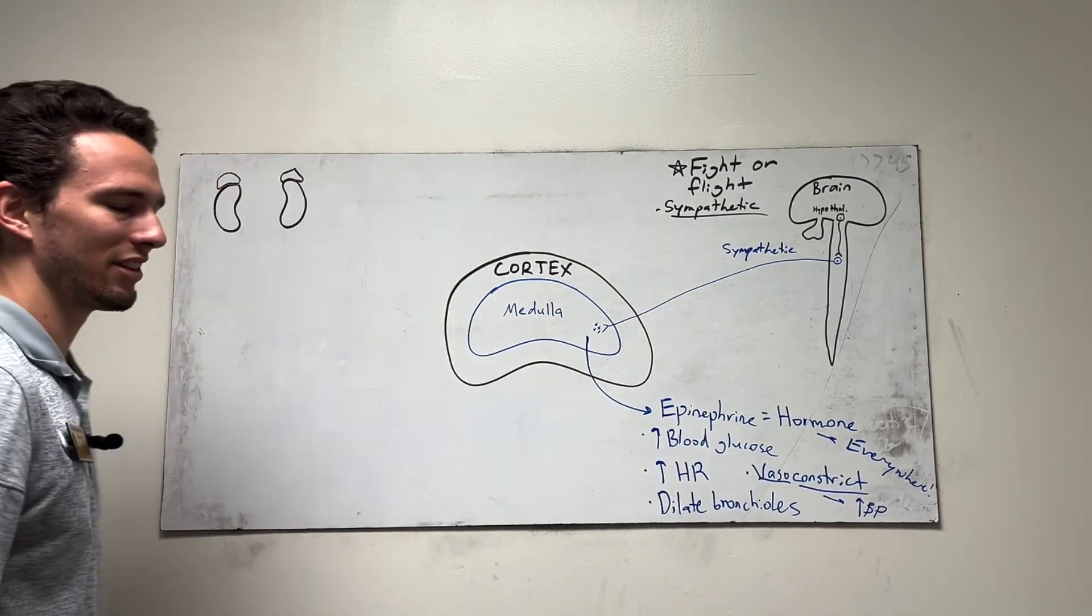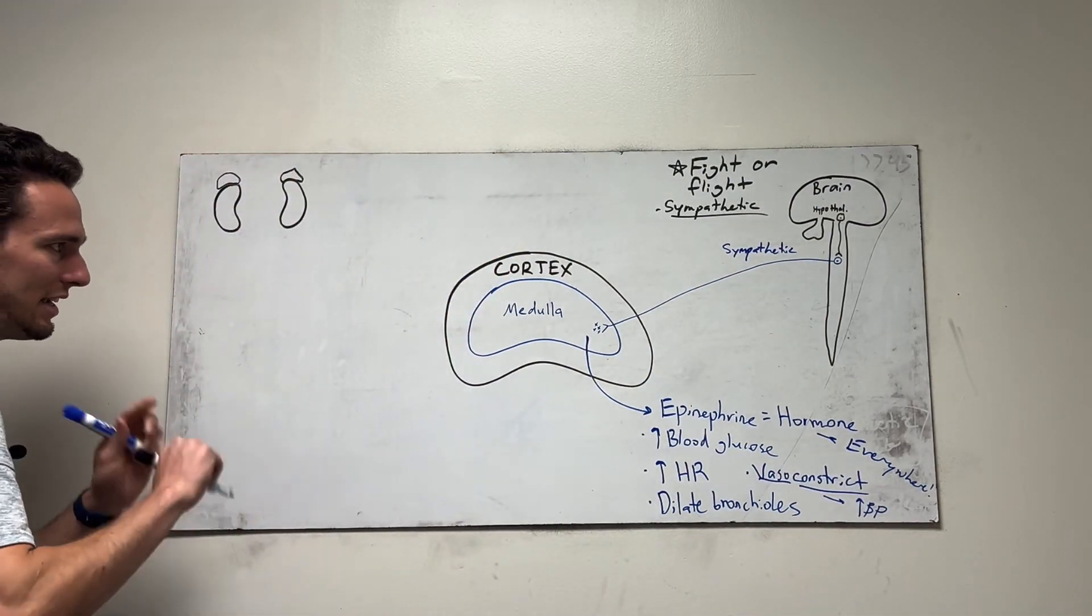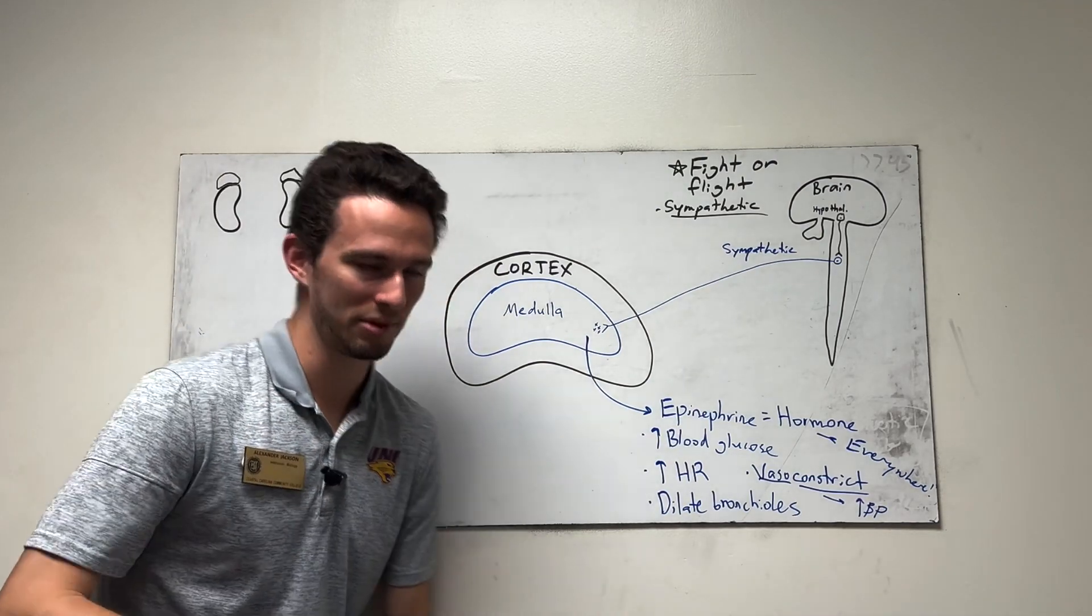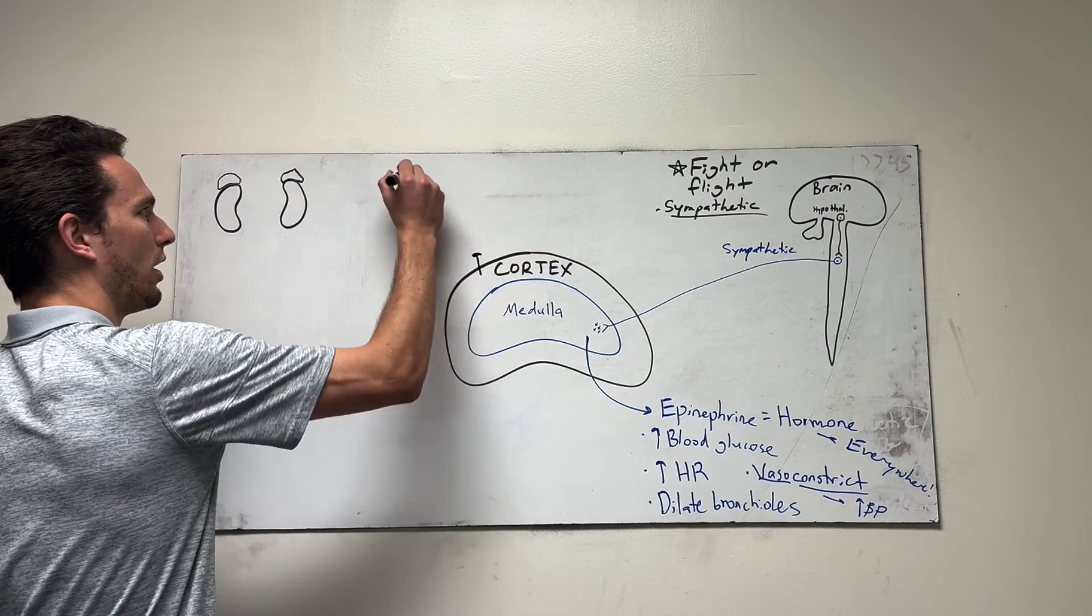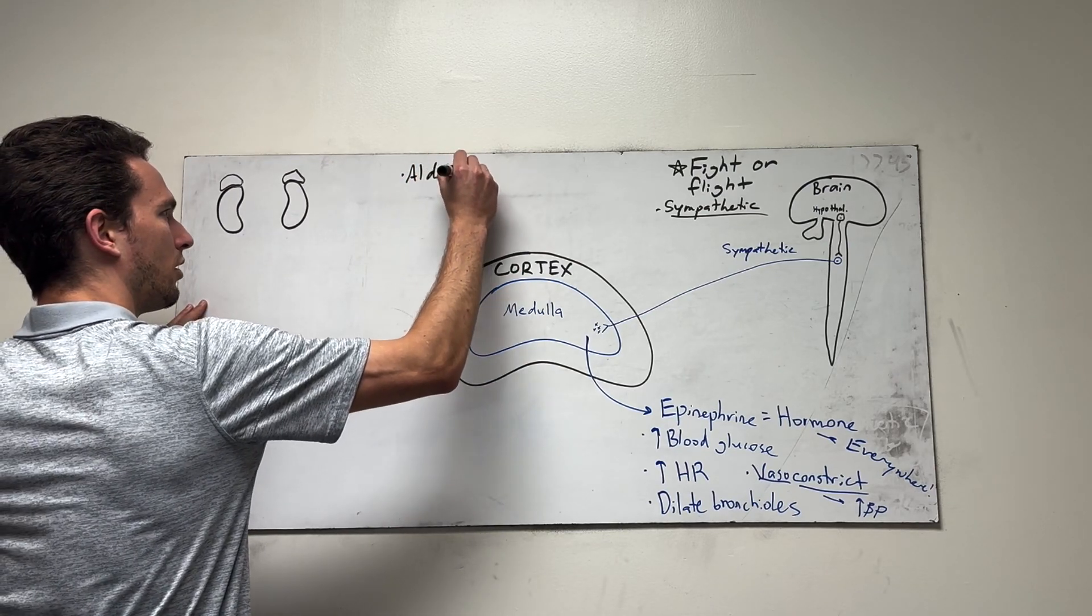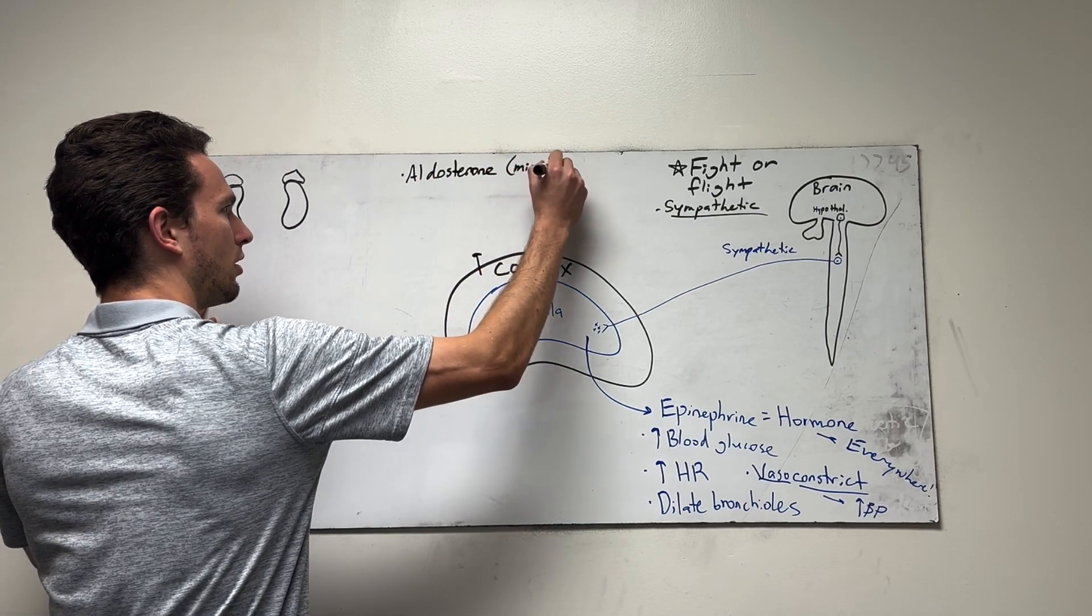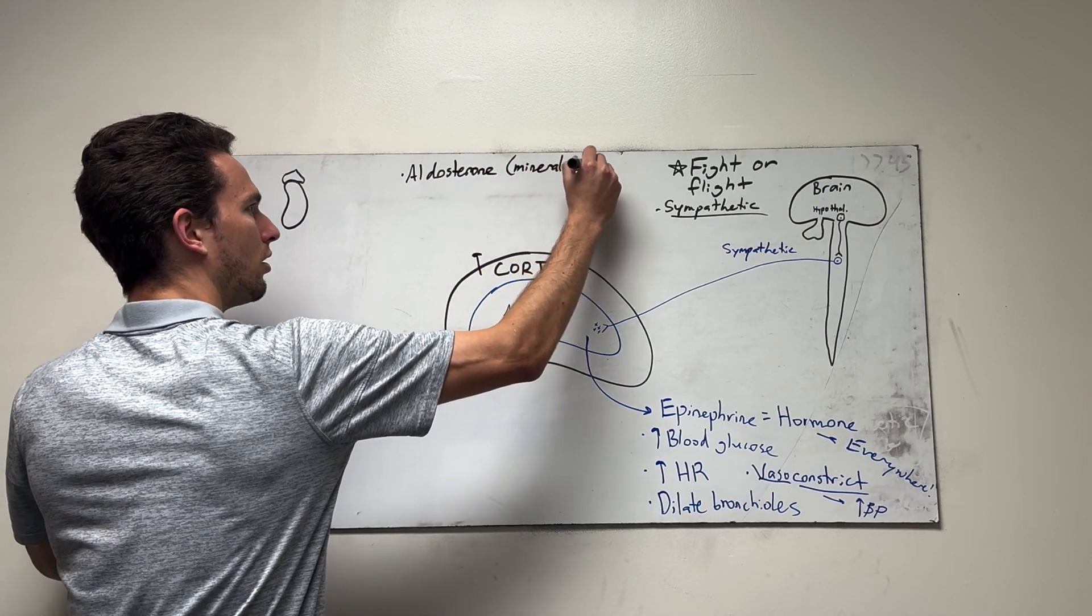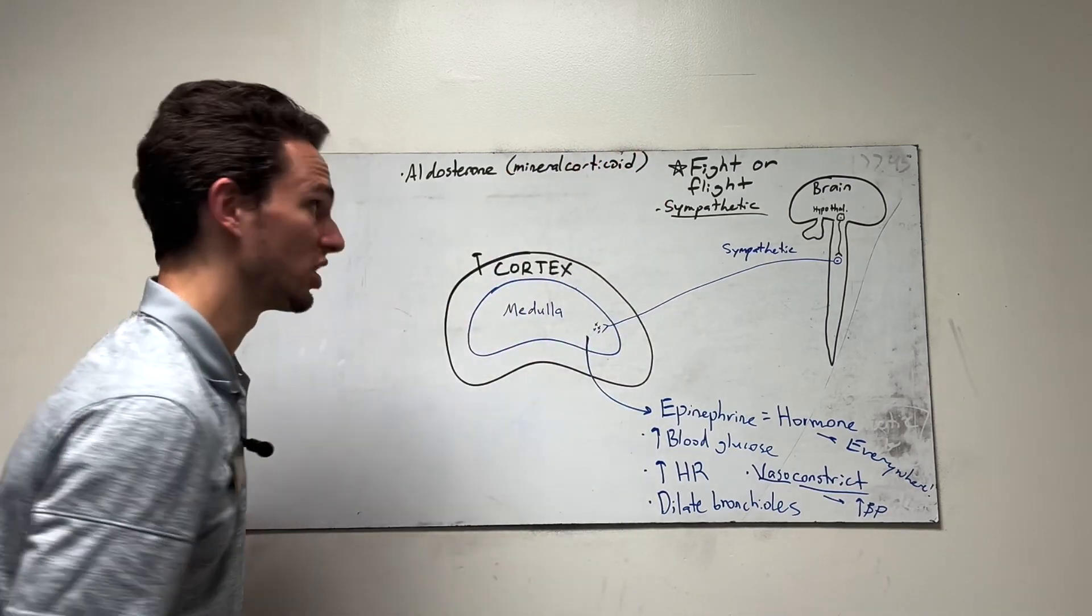Now the cortex is a little more complicated. So the cortex is going to secrete three different things in three different times. So let me just give you what they'll secrete and we'll talk about when they are produced. Number one will be aldosterone. You may see in the textbook, this is called a mineralocorticoid because it's actually going to affect some minerals and reabsorption of them.